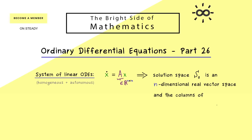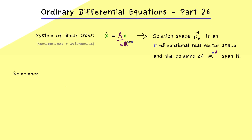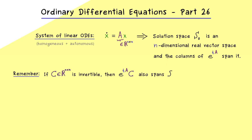No matter how the matrix A is given, the dimension of the solution space is always equal to the size of the system. We have also already shown that the columns of the matrix exponential span this solution space — every column seen as a function of t gives a solution of the original system, and all these solutions are linearly independent, so the columns span S0.